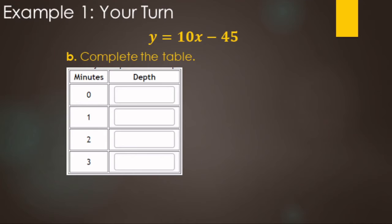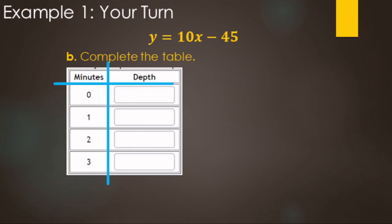Now we'll use the equation to complete a table. On your paper, just make a T-chart with minutes on the left and depth on the right, with values 0, 1, 2, 3. For minute 0, replace X with 0: 10 times 0 is 0, minus 45 gives negative 45.